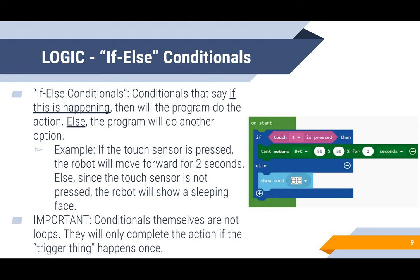A real world example for an if-else condition would be: if I eat a cookie, I will show a happy face. Else, I will be hungry. It's important to remember that conditionals themselves are not loops — they will only complete the action if the trigger thing, or the conditional, happens once.